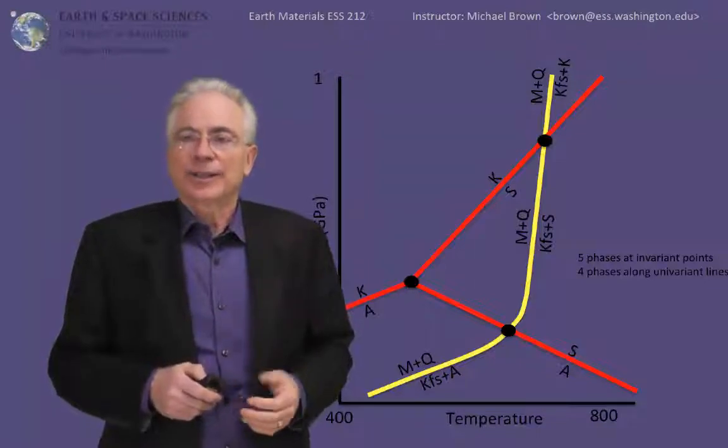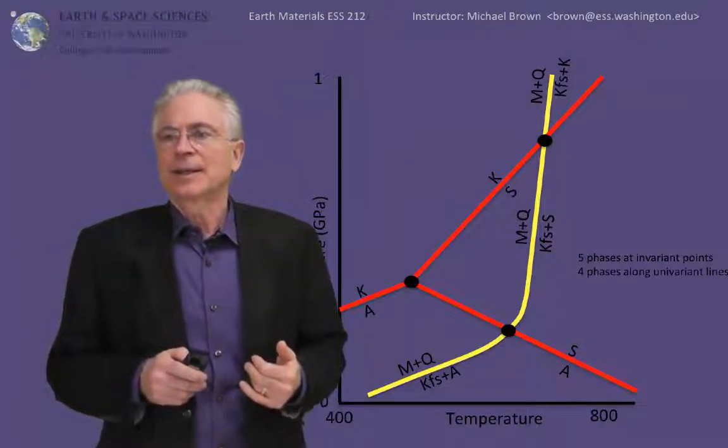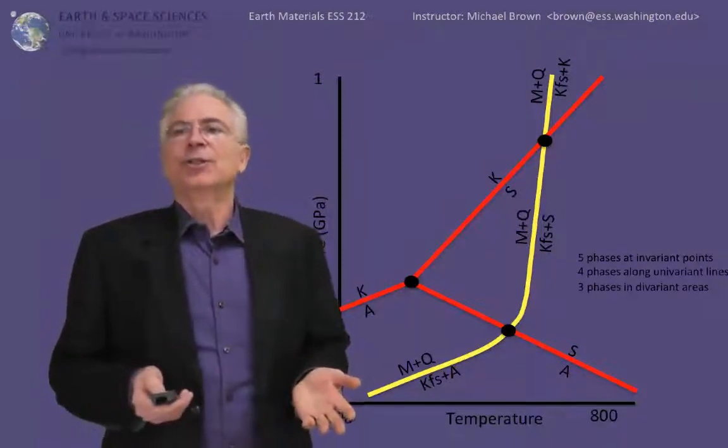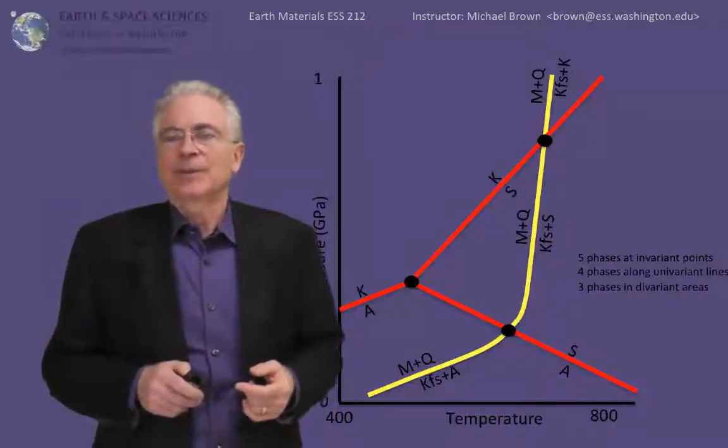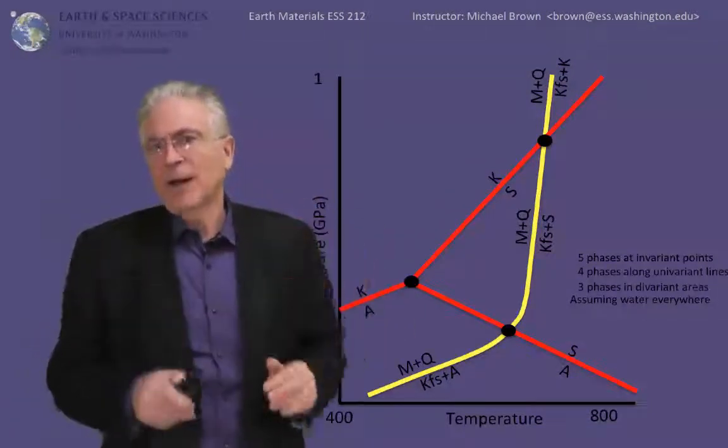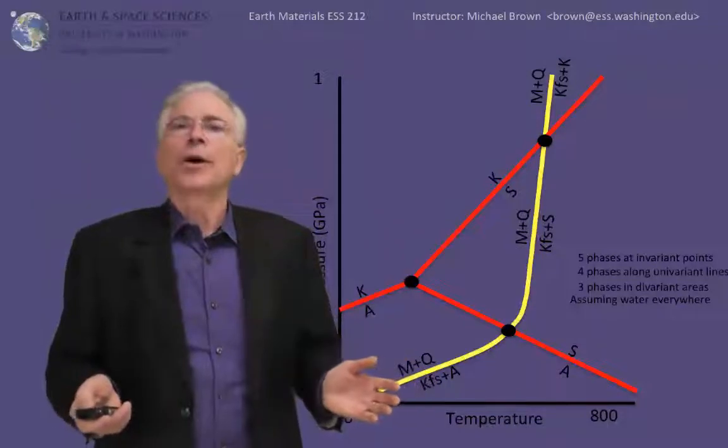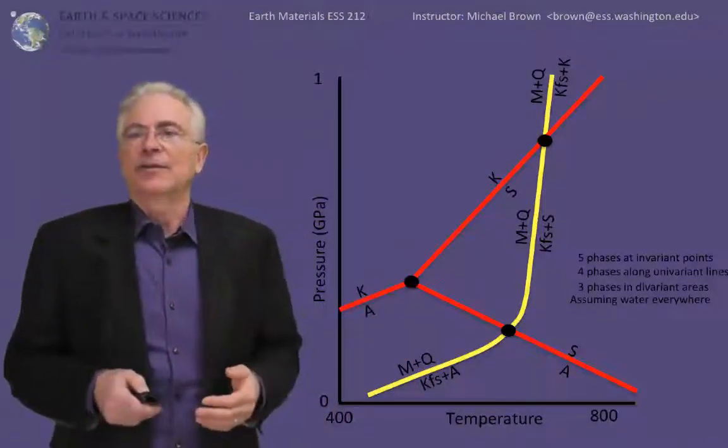Along the univariant lines, we should have four phases present, and three phases should exist in regions where you can adjust both pressure and temperature. So let's see how that plays out. And all of this, I'll remind you, is implicitly assuming that there's adequate water to allow any reaction that we want to invoke.